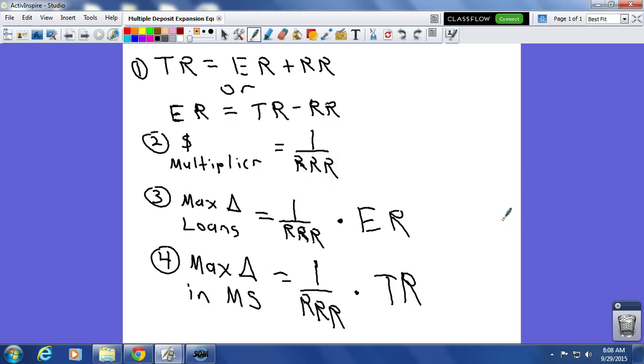Then, number four, your max change in the money supply is equal to one over your reserve requirement ratio, your money multiplier times total reserves.